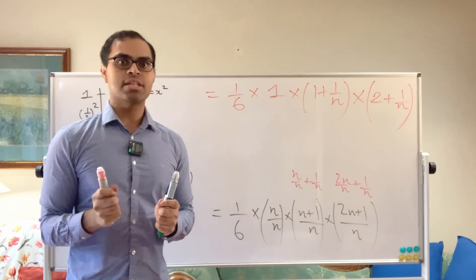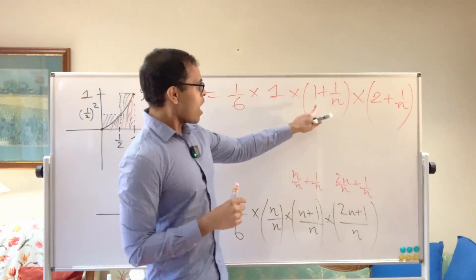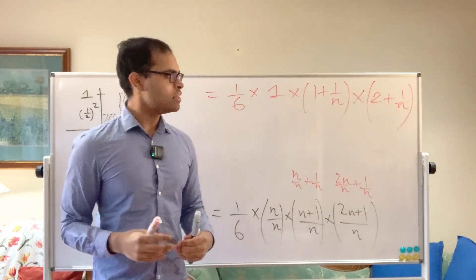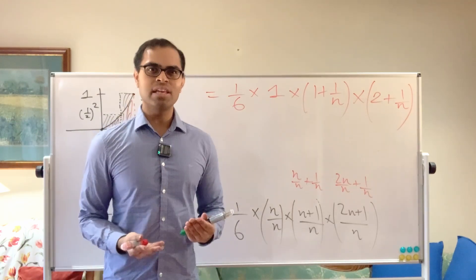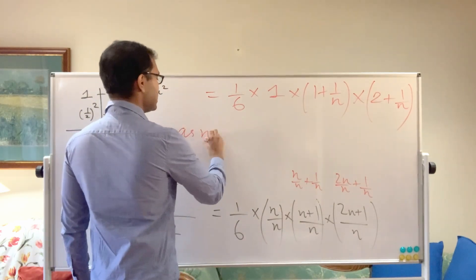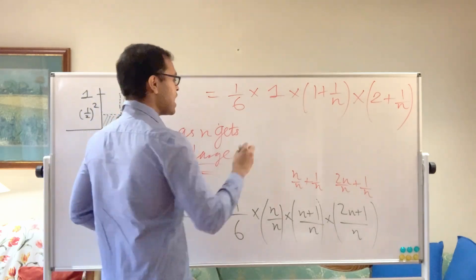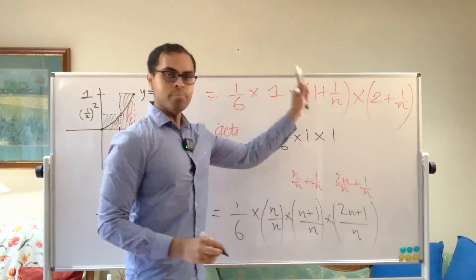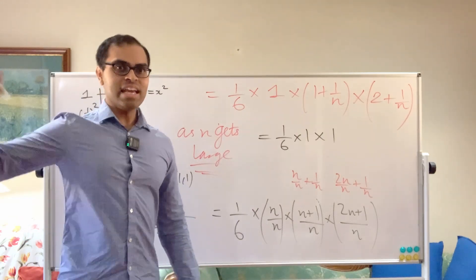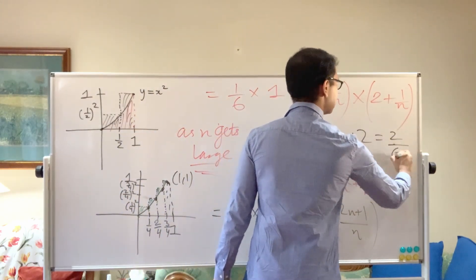Now here's what happens when n gets really, really large. Those who know limits will recognize this as a limit as n goes to infinity. Consider 1 plus 1 over n: if you split into 10 rectangles it's 1 plus 1 over 10; into 100, it's 1 plus 1 over 100; into a million, it's 1 plus 1 over a million — getting closer and closer to 1. Similarly, 2 plus 1 over n approaches 2. So as n gets very large, the expression becomes 1 over 6 times 1 times 2, which is 2 over 6, equal to 1 third.